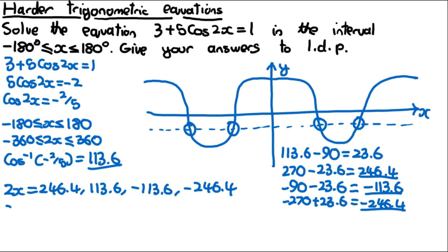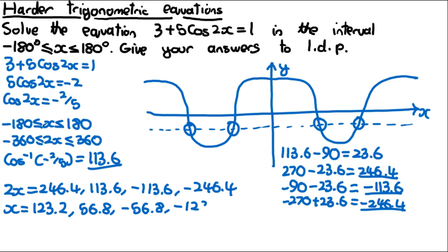Dividing all solutions by 2: x equals 123.2, 56.8, -56.8, and -123.2.